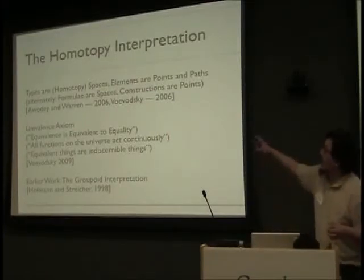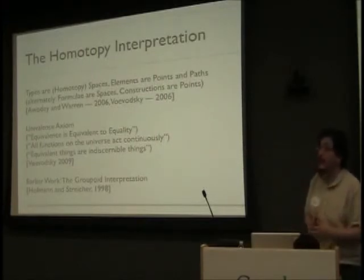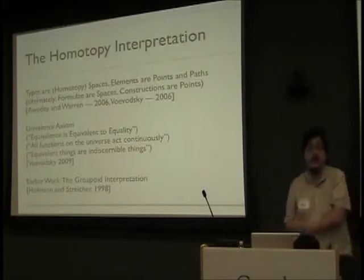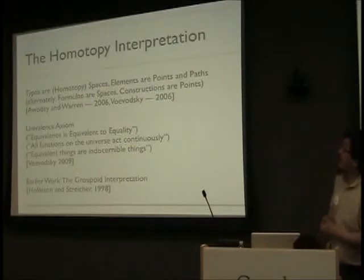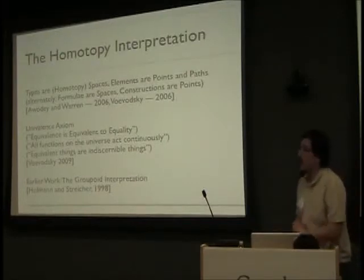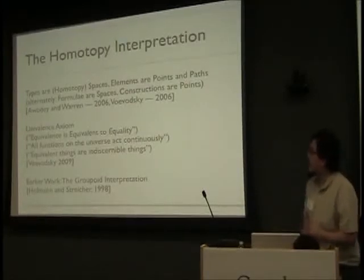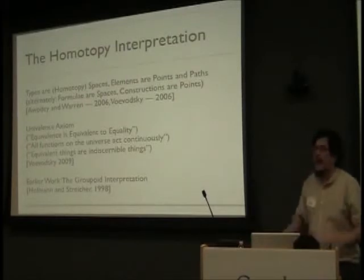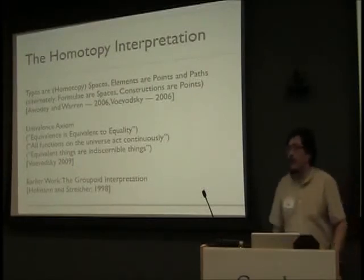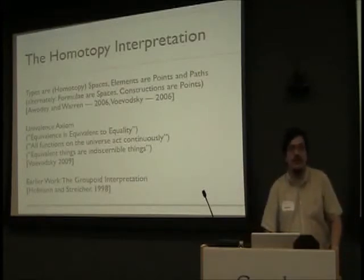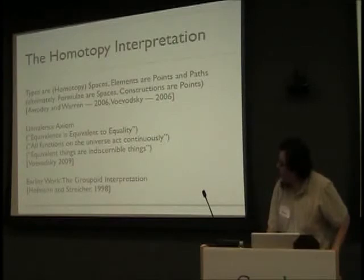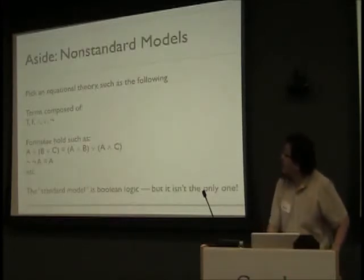We have a semi-independent discovery of variations of this by Awodey and Warren, and Voevodsky working basically independently. Voevodsky introduced the univalence axiom, which is this weird claim that equivalence is equivalent to equality — or all functions of the universe act continuously — where equivalent things are indiscernible things, or various other ways you might like to think about it that make it sound less bizarre. All of this follows on earlier work by Hofmann and Streicher: the groupoid interpretation of type theory, around 1992 through 1995.